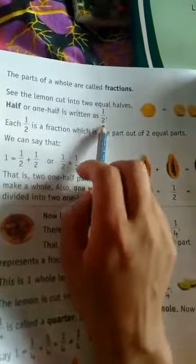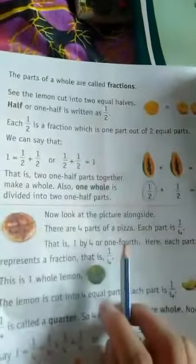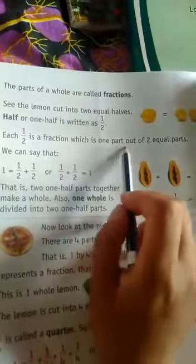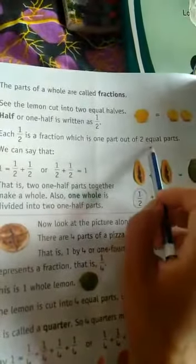Each one by two is a fraction, which is one part out of two equal parts. We can say that one is equal to one by two plus one by two.